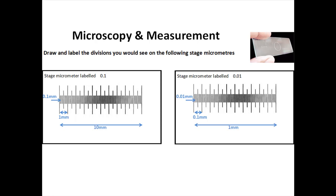Another simple way — even if the stage micrometer wasn't labeled — you can just hold it up to the light and have a look at it. If the whole thing looks roughly a centimeter, you know you've got a 0.1 micrometer: the whole thing is 10 millimeters, big line to big line is 1 millimeter, and the smallest unit is 0.1 millimeters. If the whole thing appears to be about a millimeter — so you can barely see it — then the whole thing is a millimeter, from one big line to the next big line will be 0.1 millimeters, and the tiniest units will be 0.01 millimeters.